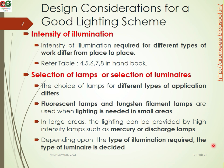Next is the design considerations for a good lighting scheme. The first point is the intensity of illumination. In a particular room, the required intensity is found from data tables. For example, for buildings, office buildings, colleges and schools, and industry — the intensity of illumination differs from place to place.